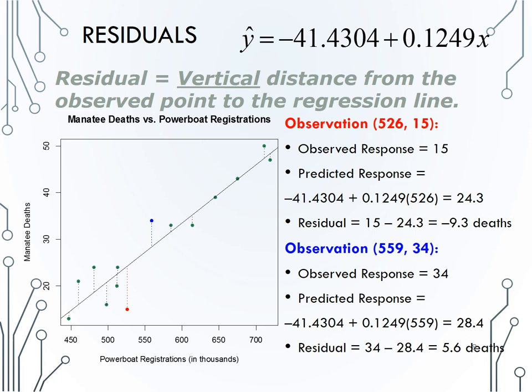And then we can see the residual would be the observed y value minus the predicted y value, giving 5.6 deaths. And again, we see a positive residual because the observed point is above the regression line.